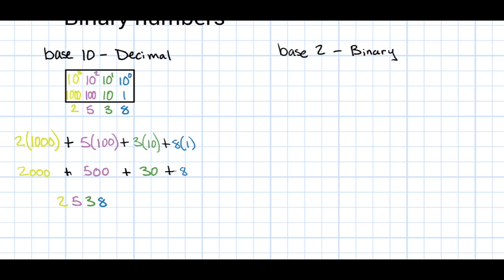To build our binary reference table, we take the number 2 as our base and use increasing exponents like before. We start with 2 raised to the power of 0, 2 raised to the power of 1, 2 raised to the power of 2, and 2 raised to the power of 3. If we calculate that out, we have 2 raised to the 0 is 1, 2 raised to the 1 is 2, 2 raised to the 2 is 4, and 2 raised to the 3 is 8.